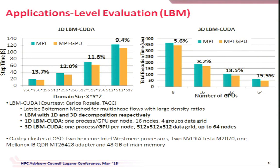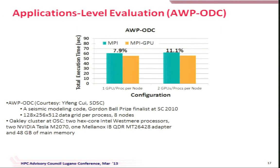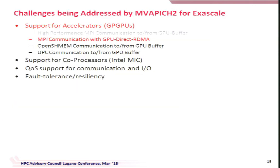We also worked with Dr. Yifeng Cui from SDSC on the AWP-ODC seismic modeling code — a Gordon Bell Prize finalist at SC 2010. With one GPU process per node and two GPU processes per node configurations, we get around 11% benefit at the application level. The MVAPICH2 library is available, and I strongly encourage you to use these advanced features to see how much benefit your applications can get.